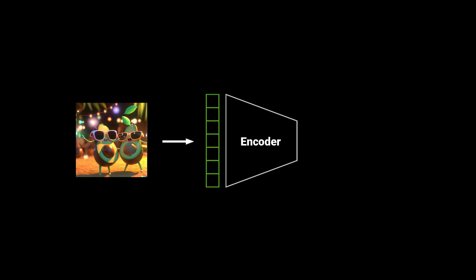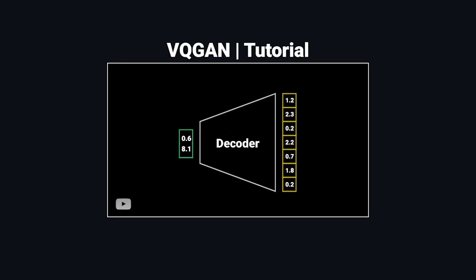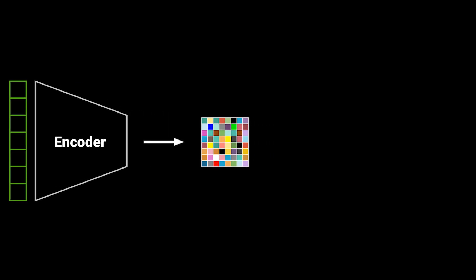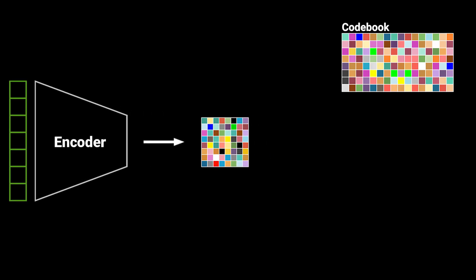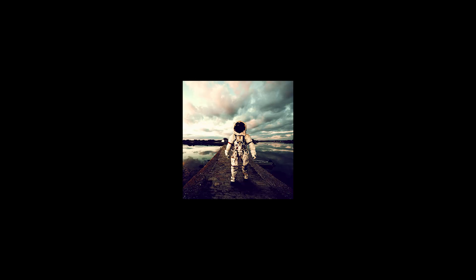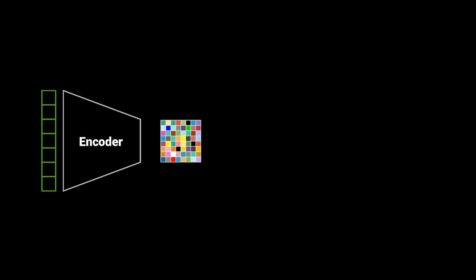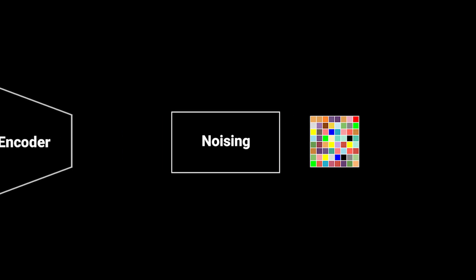How does Paella work? Paella uses a VQGAN to encode images into a smaller latent space. For example, if we have images of size 256×256 and we use a VQGAN with a compression factor of 4, the compressed version will have a resolution of 64×64. The main reason we do this is because it saves a lot of computational power. The most essential thing is that the VQGAN encoder returns tokens that are contained in a codebook — there's only a finite number of possible tokens. In the case of Paella, we usually choose about 8000.